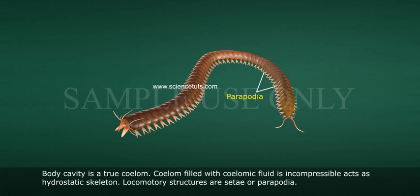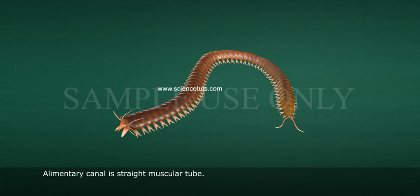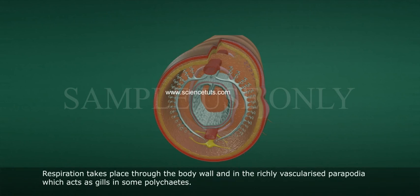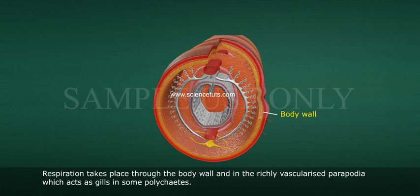Locomotory structures are setae or parapodia. The alimentary canal is a straight muscular tube. Digestive glands are present in the wall of the alimentary canal.